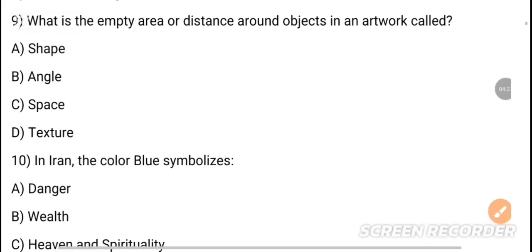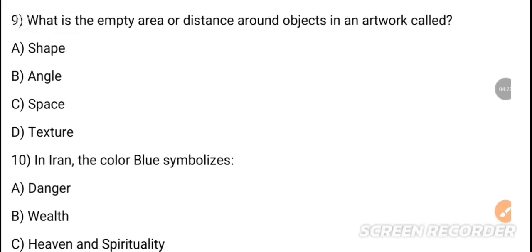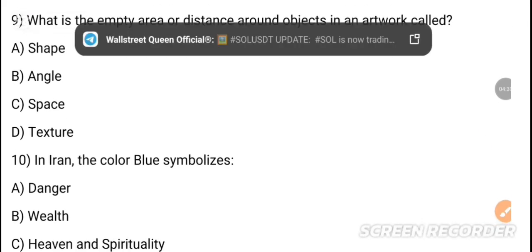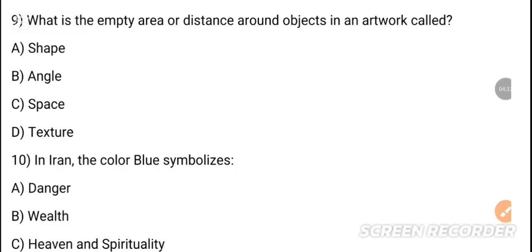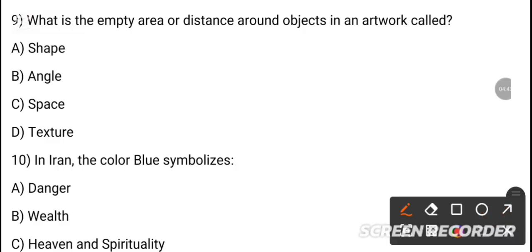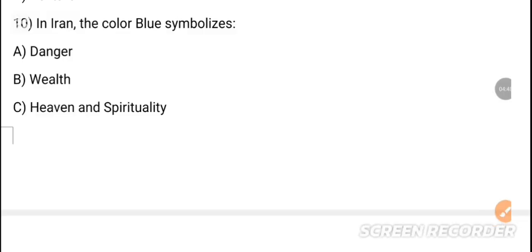MCQ 9: What is the empty area or distance around objects in artwork? Option C is the correct answer — negative space. MCQ 10: In art, the color blue symbolizes — option available.